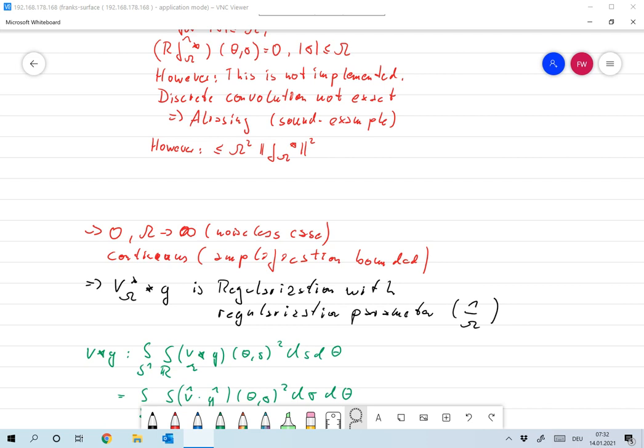The regularization parameter in our case is one over omega, and that means that filtered back projection is a classical regularization scheme with parameter where the parameter is the bandwidth.